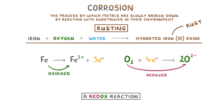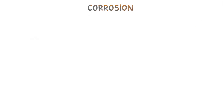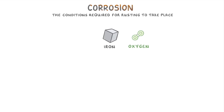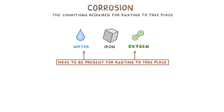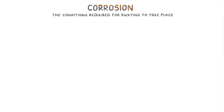Because both oxidation and reduction are taking place in the same reaction. The next thing we need to cover are the conditions required for rusting. We said earlier that rusting involves iron reacting with oxygen and water from the environment, so both of these have to be present for rusting to take place.